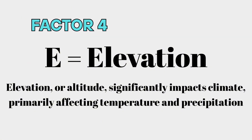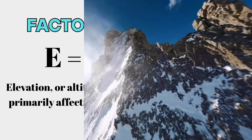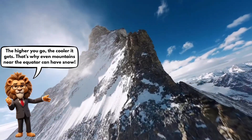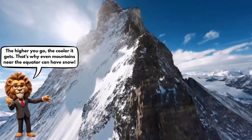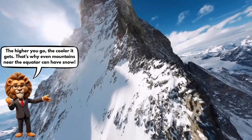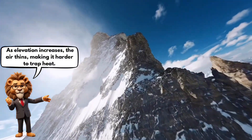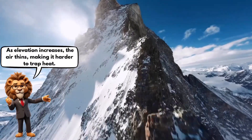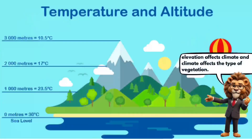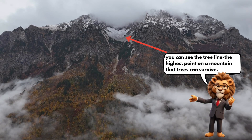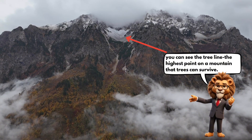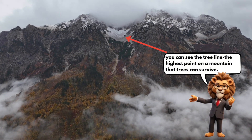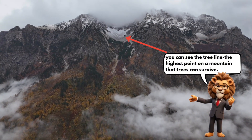Factor four: elevation. The higher you go, the cooler it gets. That's why even mountains near the equator can have snow. As elevation increases, the air thins, making it harder to trap heat. Elevation affects climate, and climate affects the type of vegetation. Here you can see the tree line — the highest point on a mountain that trees can survive.